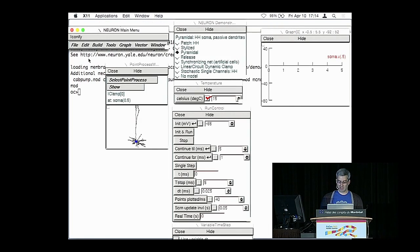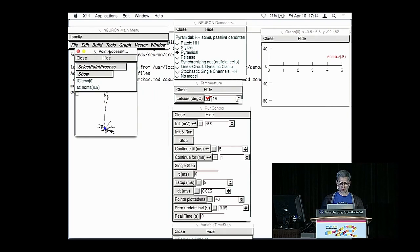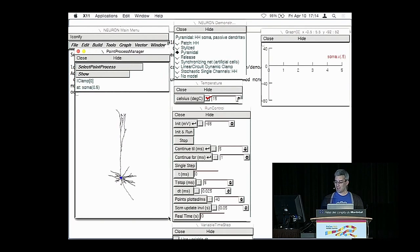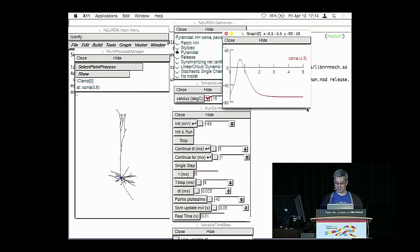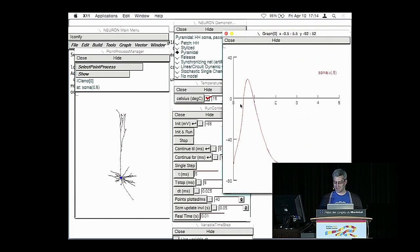So what Neuron is doing right now is called a current clamp experiment. So this I clamp here, I stands for current. And essentially, at this blue dot, there's a simulated electrode that's injecting a little bit of current into the soma of this cell. So if I run this model now, over here, this graph populates. On the x-axis, we have time in milliseconds. On the y-axis, we have the voltage recorded from this cell.